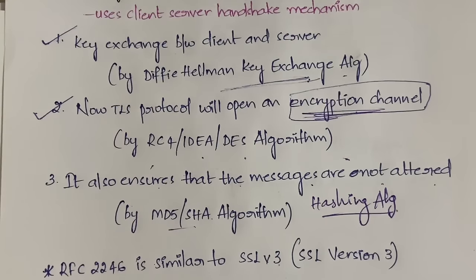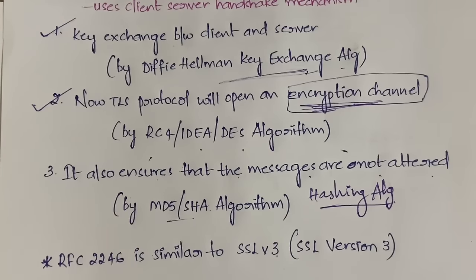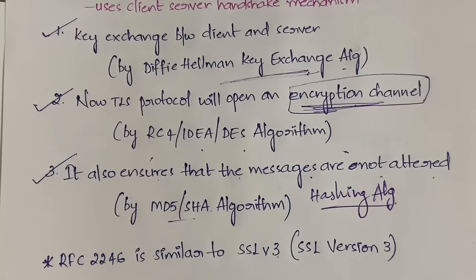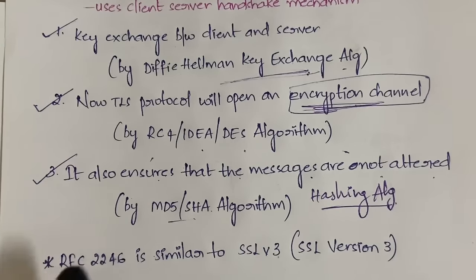To summarize the working of TLS: first, a connection is established between the client and server; then both exchange their keys to verify authorization; once verified, TLS opens an encryption channel where data is encrypted; finally, TLS ensures that data sent between client and server is not altered in transit, using hashing algorithms like SHA or MD5.